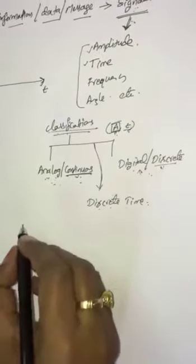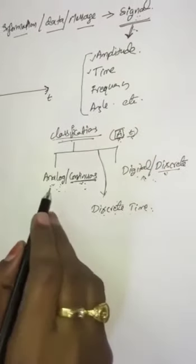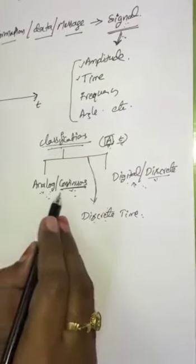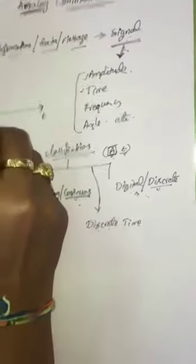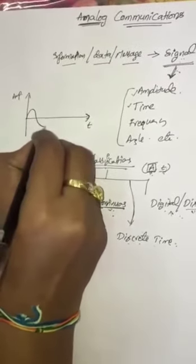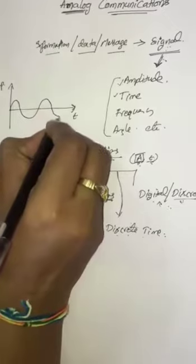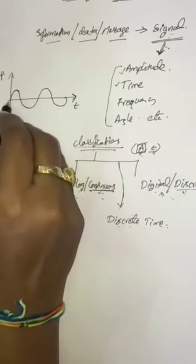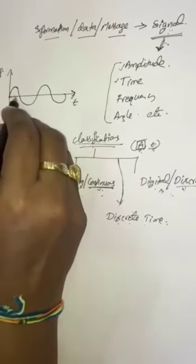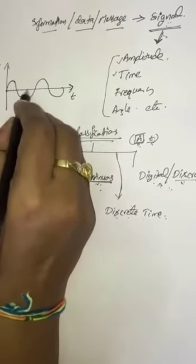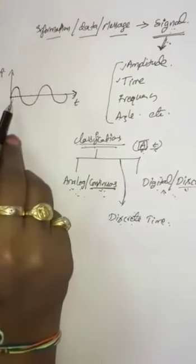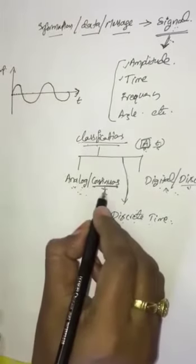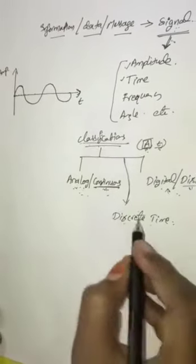Now I will give a pictorial representation of each classification of signal. The first one is analog and continuous. Taking the example of a sinusoidal signal, the amplitude is continuous at every instant of time — we can define the amplitude of the signal at every instant of time. There is no break in time or amplitude. That signal is called a continuous signal or analog signal.